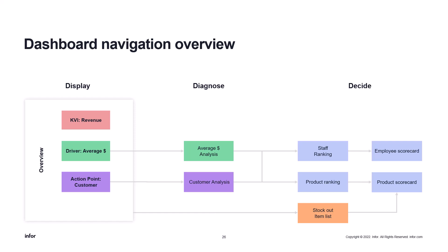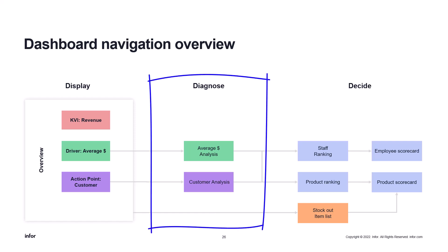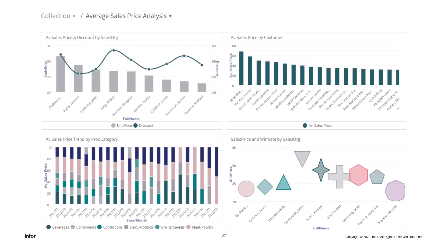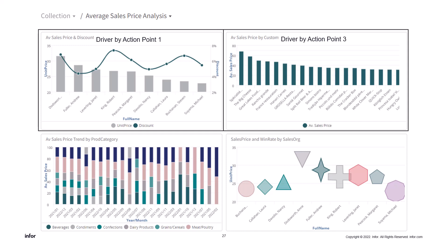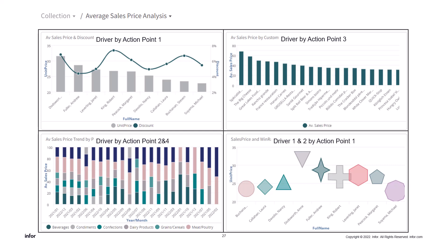From the display view we move on to diagnose. We have a page dedicated to analyzing the average selling price, and the second dashboard is dedicated to analyzing the customer. Let's look at a sample diagnose page — we're going with average sales price analysis as our KVI driver. We have the driver by action point one, by action point three, by action points two and four, and we have drivers one and two by action point one. The whole page is about the average sales price driver and analyzing that.